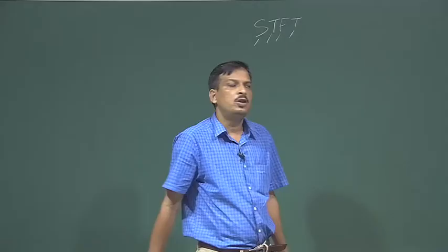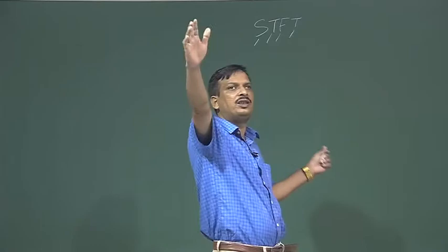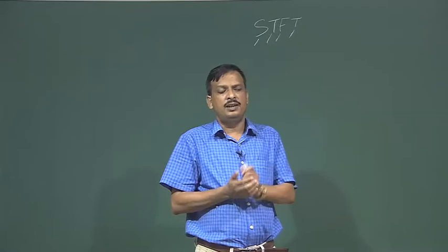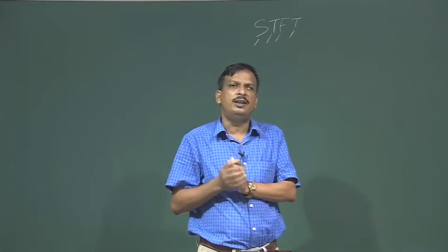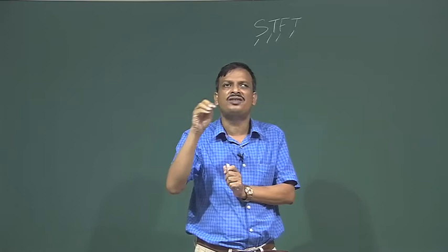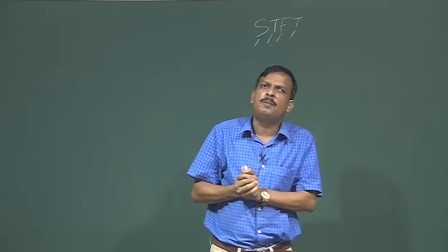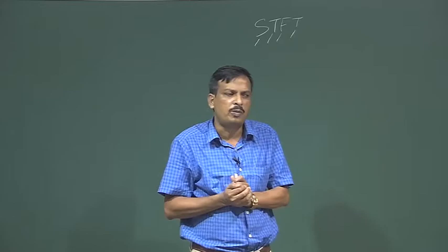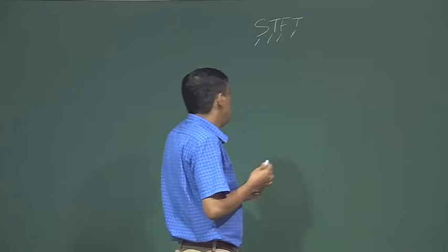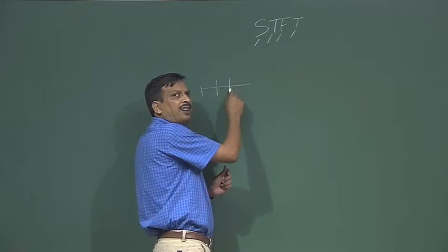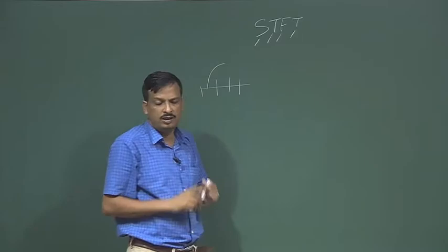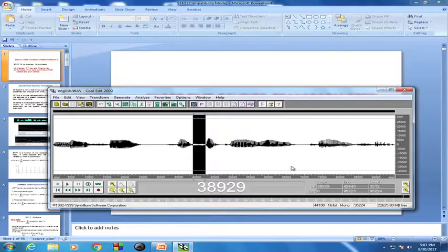If I have a long speech signal — a word or a sentence — and I take the whole sentence at a time, it may consist of several variations of the signal. That means the signal is not stationary along time. If I take the whole signal and do frequency analysis, I do not get any useful information about the different speech events. So what we want is to analyze how the signal property varies across time, by taking a short segment of the signal and doing analysis.